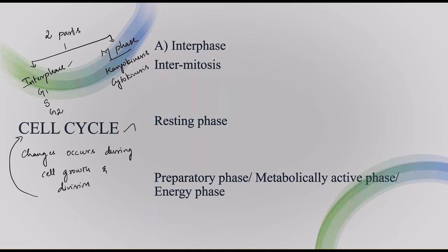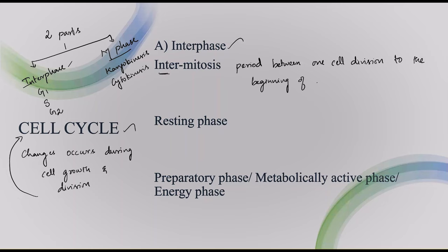Now we are getting into the interphase. The interphase has various names, and if we understand those names, we can find out the function. The first name is intermitosis — mitosis being the M phase, and 'inter' meaning between. So this interphase is going to happen between two M phases. It is a period between one cell division to the beginning of the next cell division.